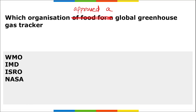Next question: which organization approved a global greenhouse gas tracker? It is your WMO — the World Meteorological Congress — which is the supreme body of the World Meteorological Organization. They have recently approved a global tracker for greenhouse gas emissions.